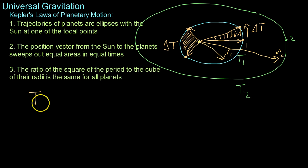Now what this law is basically saying is that T1 squared over R1 cubed is going to be equal to T2 squared over R2 cubed, which, because they're the same, will equal some constant for all the different planets.